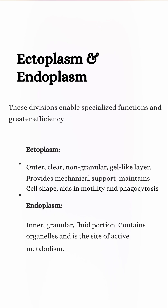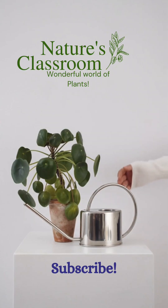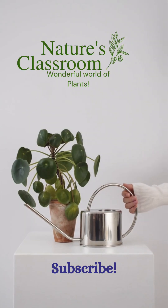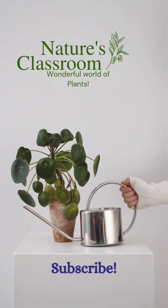Ectoplasm provides mechanical support, maintains cell shape, and plays a role in cell motility, phagocytosis, and endocytosis. Endoplasm contains organelles and is the site of active metabolism.